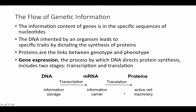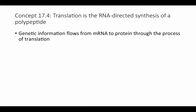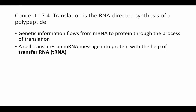The ultimate goal in gene expression is the production of proteins, and they do that by the process of translation. We're going to take information from the information carrier, the mRNA molecule, and translate it from the language of a nucleotide sequence into the language of an amino acid sequence. Genetic information flows from mRNA to protein through the process of translation, with the help of another kind of RNA molecule called transfer RNA, or tRNA.